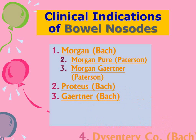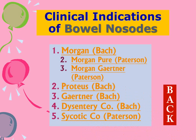The bracket notation is essential for Morgan. For the other nosodes — Proteus, Gaertner, Dysentericae, and Psychoticum — the bracket does not matter as there is only one of each. There are a few more but these are the prominent ones we shall cover in this session. Let us now go to Morgan Bach.